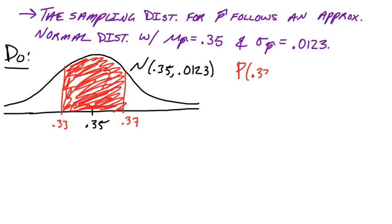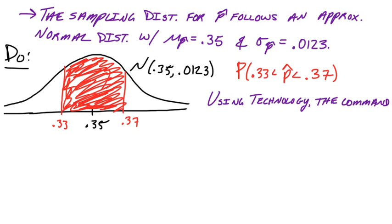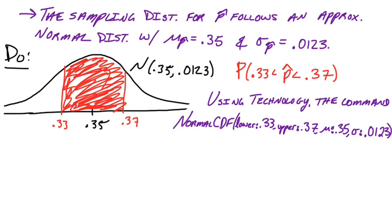And then so I'm going to keep using red here. The probability that we get a P hat, let's put a little hat on this thing, between 0.33 and 0.37, well, now it's just a normal calculation. So I'm going to use technology in this case. The command normal CDF. The lower bound would definitely be the 0.33 boundary. Therefore, the upper bound would be the 0.37 boundary. And also give the mean and the standard deviation.